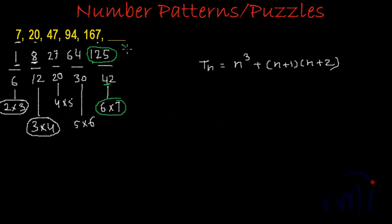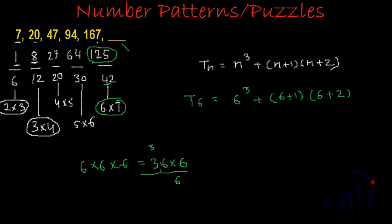To find the sixth term we have to find T6, and it will be equal to cube of 6, that is 6 cubed, plus (6+1) multiplied by (6+2). Cube of 6 is 6 multiplied by 6 multiplied by 6, which is 216. And this part of the term will be equal to 6 plus 1 is 7.